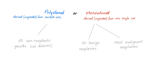Are cancers monoclonal or polyclonal? For simplicity's sake, say that cancers are monoclonal. What does monoclonal mean? It means that the disaster started in one crazy cell — just one stupid, abnormal, malignant mutant cell is what started everything.